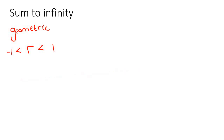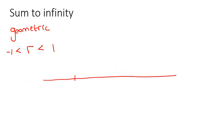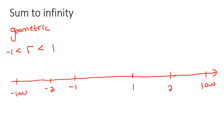So if we had to draw a number line, it would be all the numbers — let's say minus 2, positive 2, and it can go all the way up to like 1,000 or minus 1,000, whatever. It would be all the numbers there. So it's all the numbers between minus 1 and 1. That's when you would use sum to infinity.